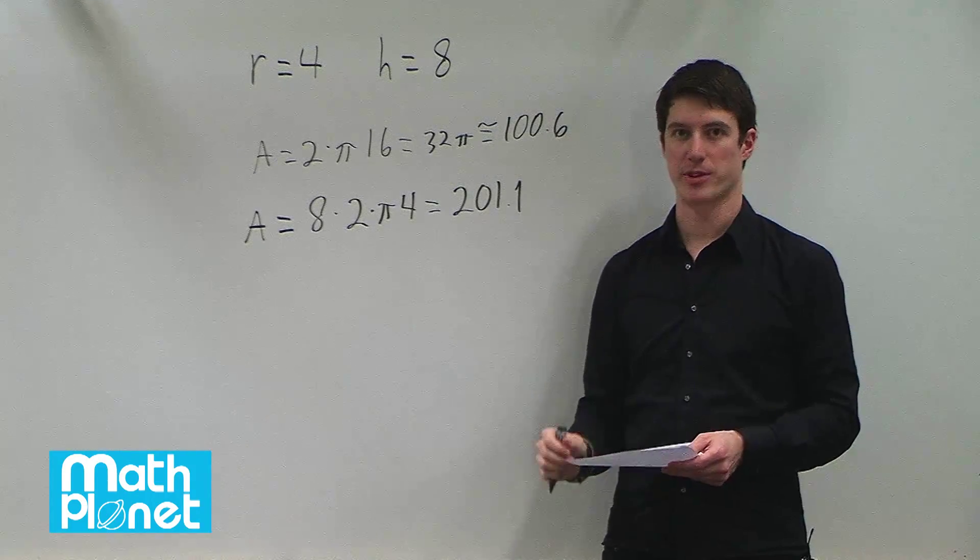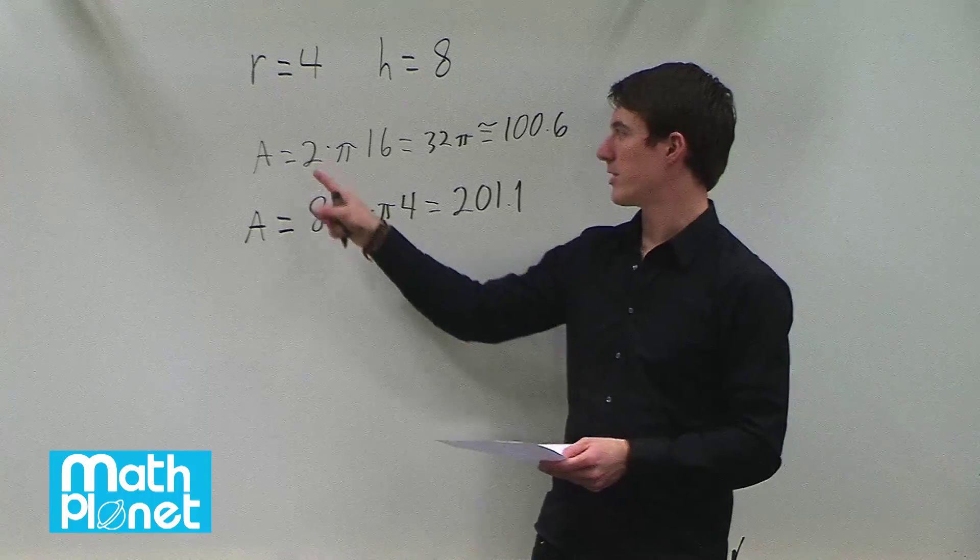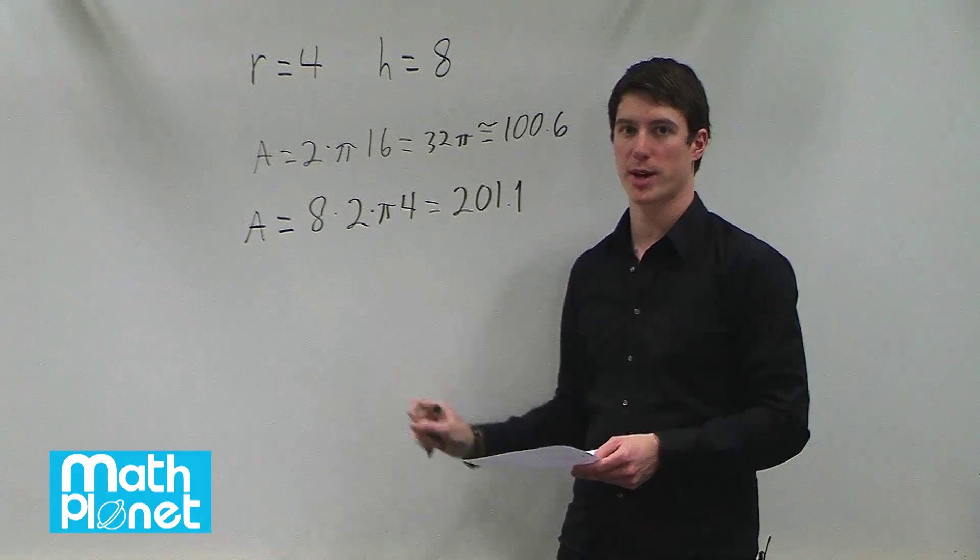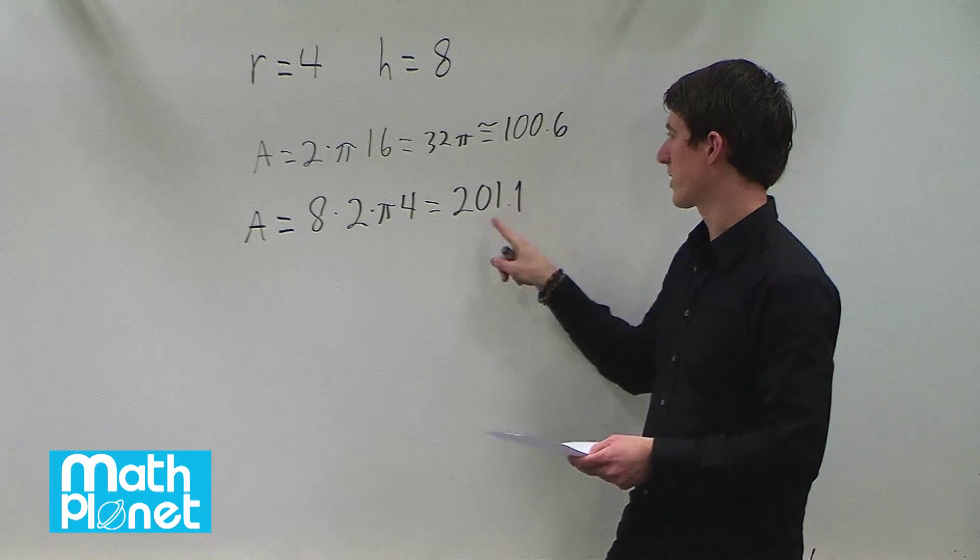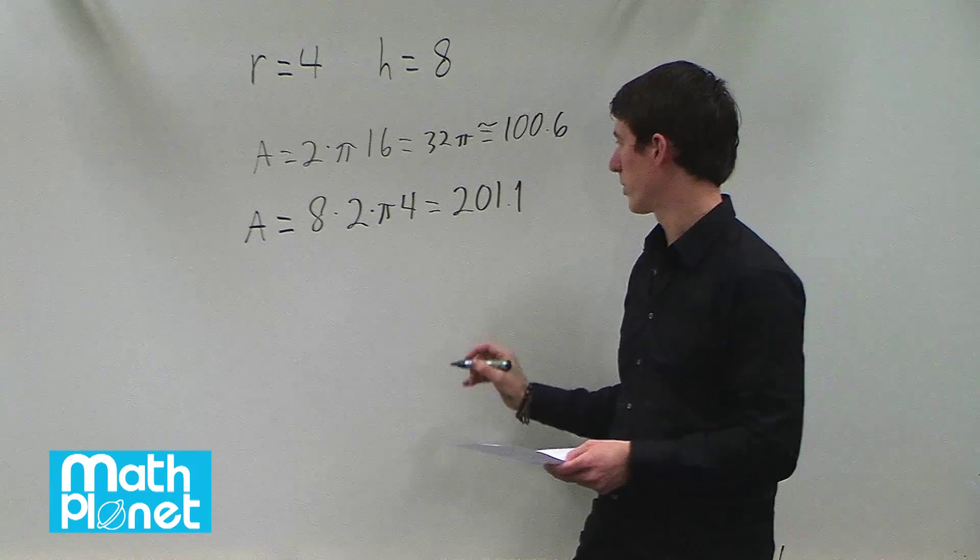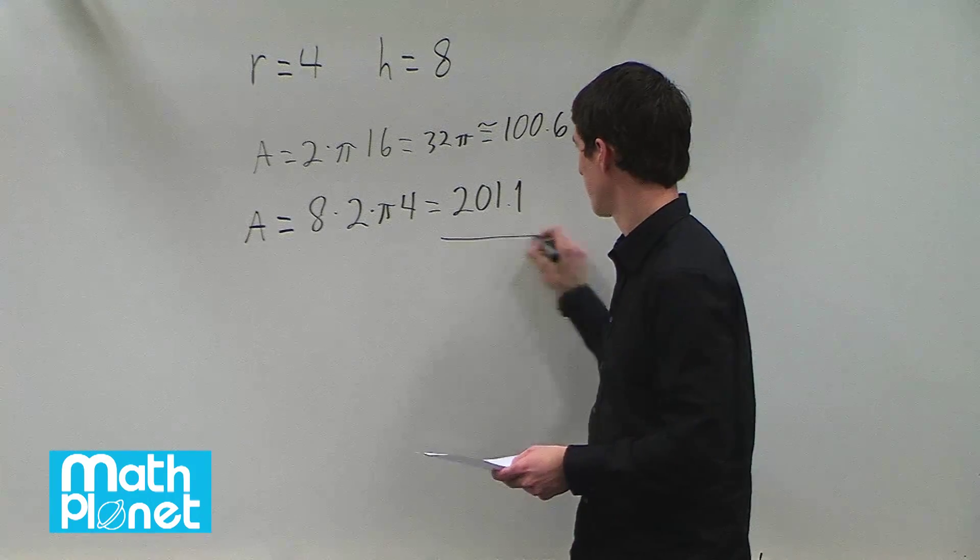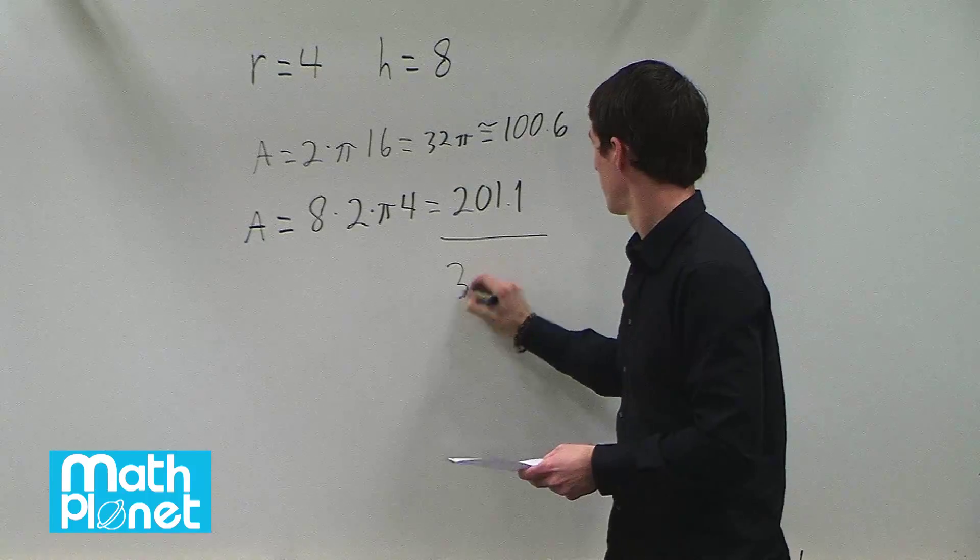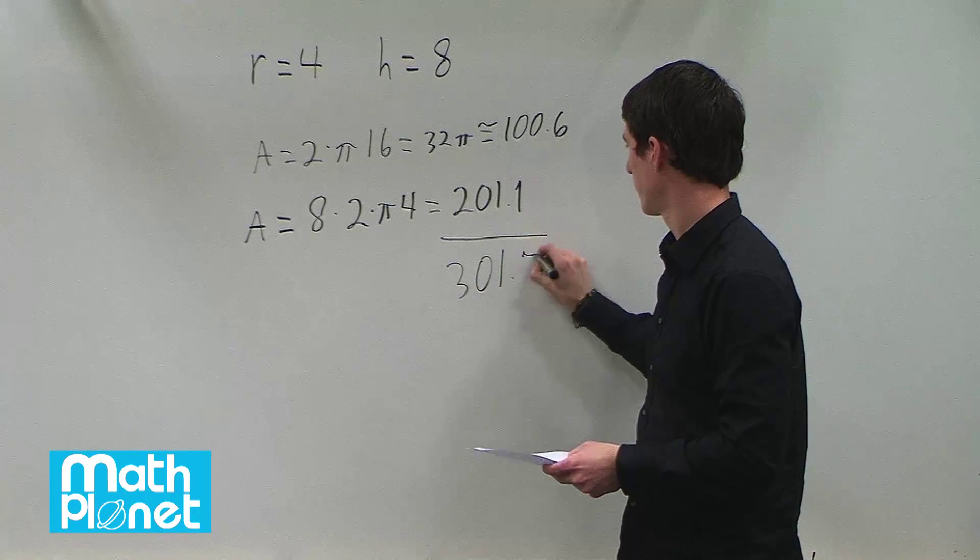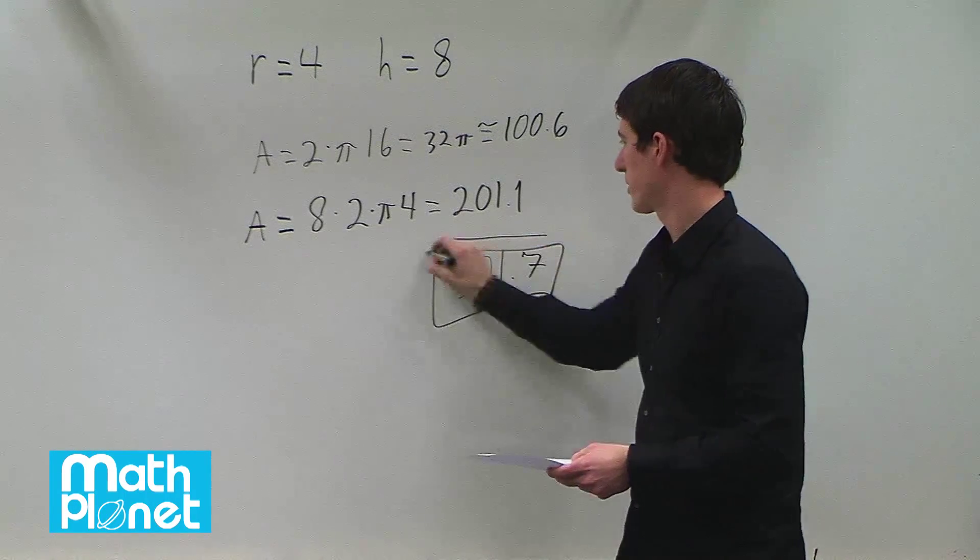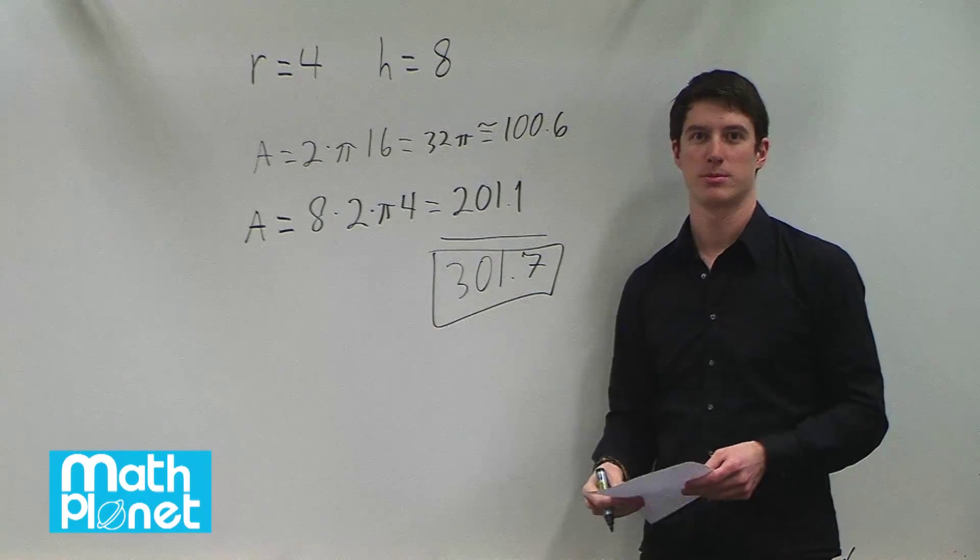And now to find the total surface area of a cylinder you have to add the two circles and the rectangle together. So 100.6 plus 201.1 which comes out to be, if you add those together, 301.7 is the approximate surface area of the whole cylinder.